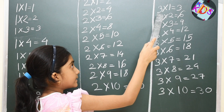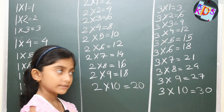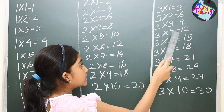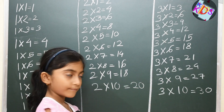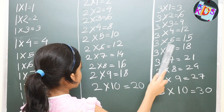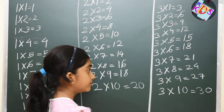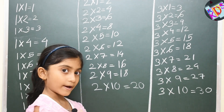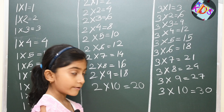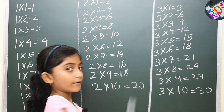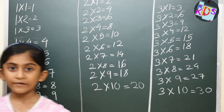Three ones are three, three twos are six, three threes are nine, three fours are twelve, three fives are fifteen, three sixes are eighteen, three sevens are twenty-one, three eights are twenty-four, three nines are twenty-seven, three tens are thirty.